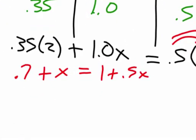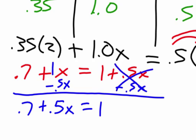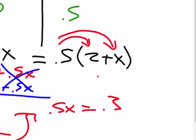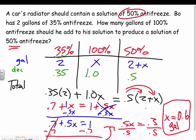Subtract 0.5x from both sides. We have 1 minus 0.5, which gives 0.5x on the left. Then subtract 0.7 from both sides: 0.5x = 0.3. Divide by 0.5 on both sides, and x equals 0.6. That's 0.6 gallons of 100% antifreeze to add to get the 50% mixture we need in the car. The key is setting up that table and getting the equation right.